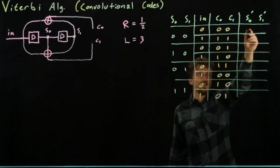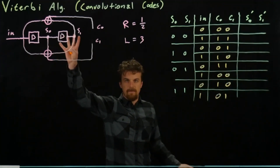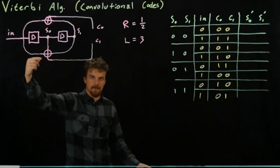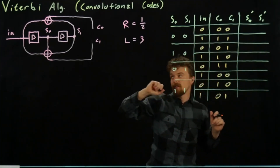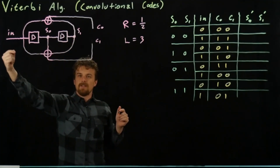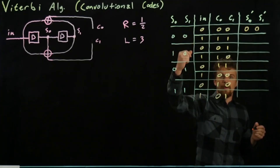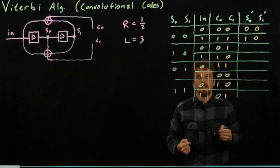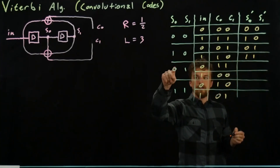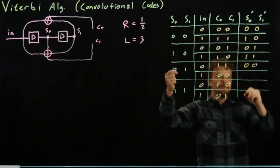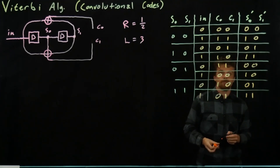We can also record the next state for each transition, which lets us build a trellis. Because this is a shift register with bits input one at a time, we know what the next state will be. If we're in state 0,0 and input a 0, we stay in state 0,0. If we're in state 0,0 and input a 1, we go to state 1,0. From state 1,0 inputting 0 goes to 0,1; inputting 1 goes to 1,1. From state 0,1 inputting 0 goes to 0,0; inputting 1 goes to 1,0. From state 1,1 inputting 0 goes to 0,1; inputting 1 stays in 1,1.